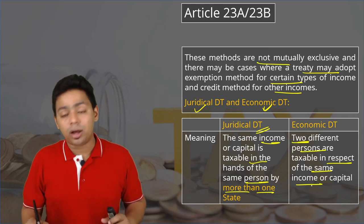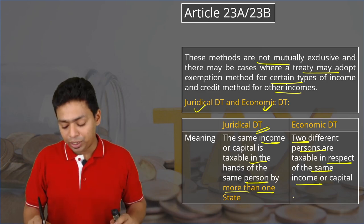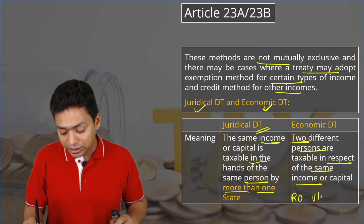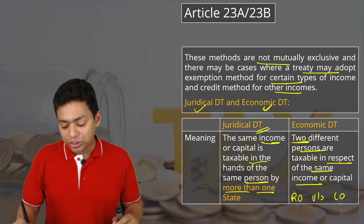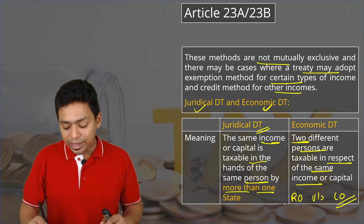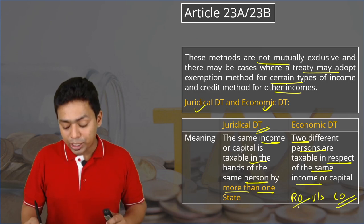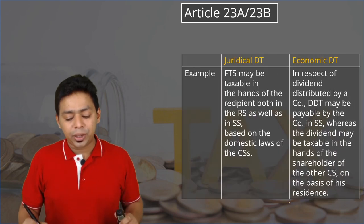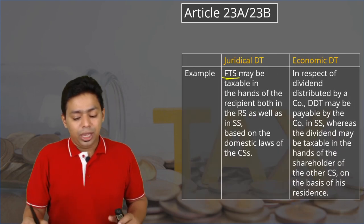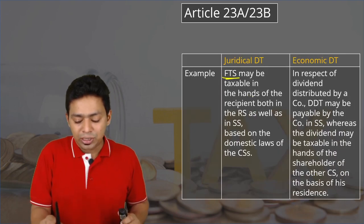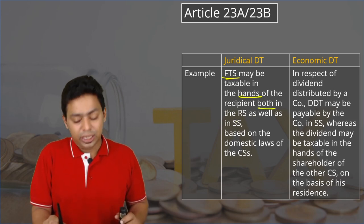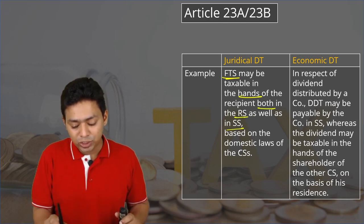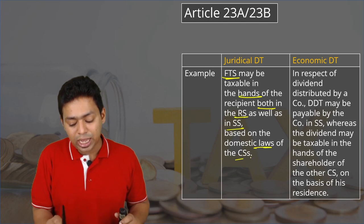An example of economic double taxation: there is a dispute between real owner versus legal owner. There might be a country taxing the legal owner whereas India may tax the real owner under the deemed income concept. Another example: fees for technical services (FTS) may be taxable in the hands of the recipient in both the residence state and the source state based on domestic tax laws.